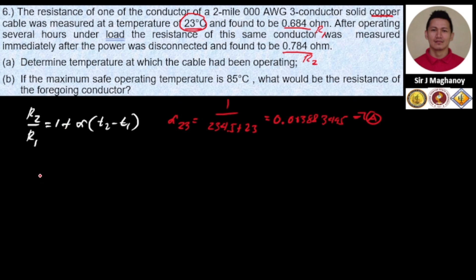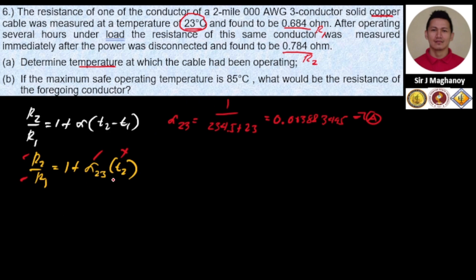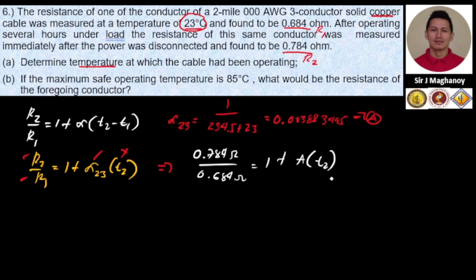We are tasked to determine the operating temperature for part A. Using R2 equals R1 times (1 plus alpha at 23 times delta T), we substitute our known values: R2 is 0.784 ohms, R1 is 0.684 ohms, and the temperature coefficient alpha is our calculated value. Dividing R2 over R1 gives us 1 plus alpha times (T2 minus 23), where T2 is the unknown operating temperature.